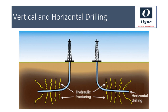After the horizontal drilling is completed, the reservoir rock is fractured by injecting a mixture of high-pressure sand, water and chemicals. A single horizontal well can effectively produce the same reservoir as that of up to 30 conventional vertical wells.